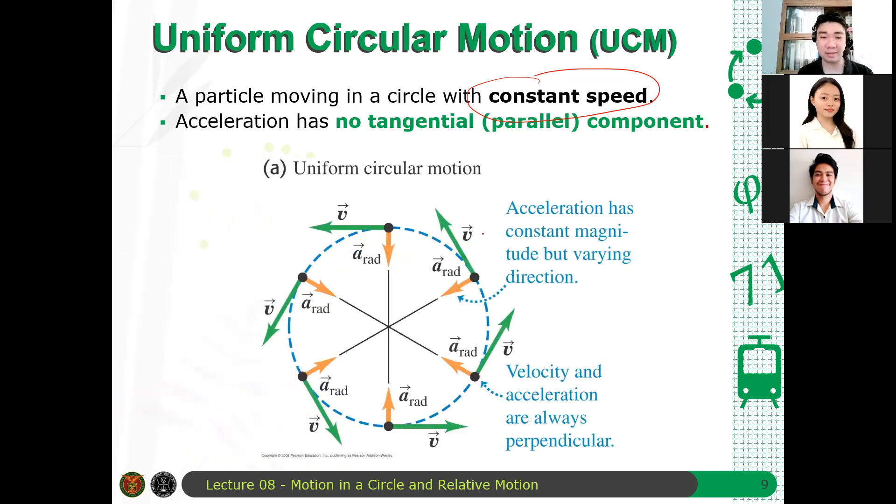And so, it looks like this. So, for a particle in uniform circular motion, the velocity and the acceleration vectors are always perpendicular to each other. Because the acceleration is center-seeking. It means that it's centripetal. Kaya, ang tawag sa uniform circular motion ay centripetal motion. Because the acceleration, or in that case, the force, is center-seeking. Papunta siya sa center nung bilog.